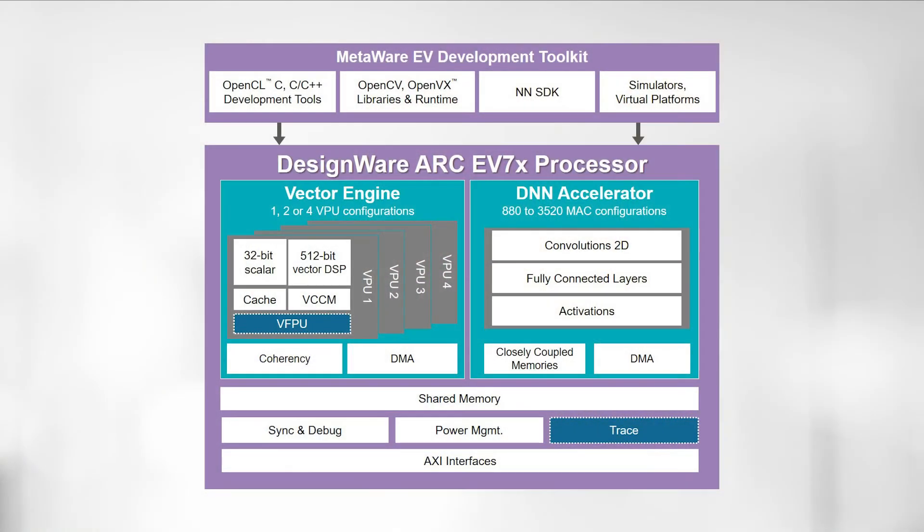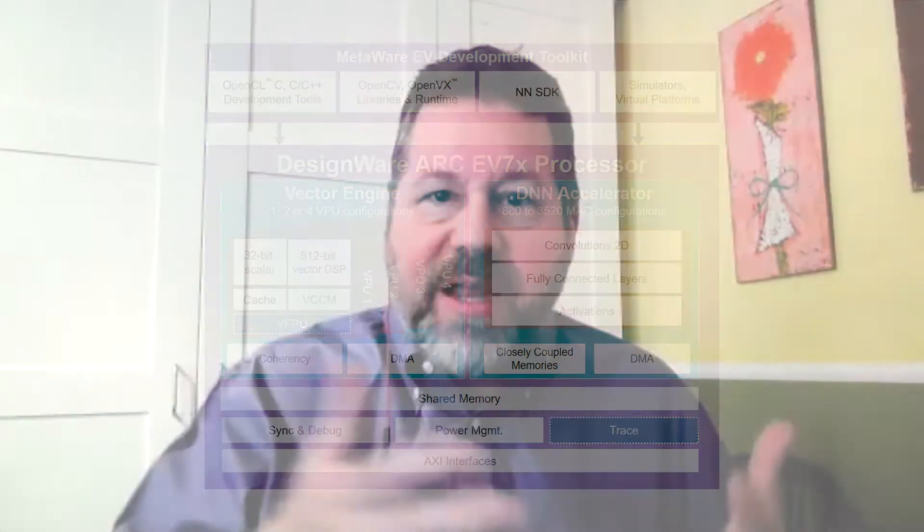So we here at Synopsys have the EV7X family with a scalable DNN solution. You can scale from 880 max to high resolution. If you're looking to implement super resolution, you're going to need to know the input resolution, the output resolution, and any bandwidth limitations.